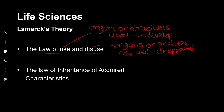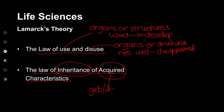Lamarck's second law was the law of inheritance of acquired characteristics. Acquired means we get or develop a characteristic during our lifetime. His law stated that a characteristic developed in an individual's lifetime is then inherited by the offspring of that organism.